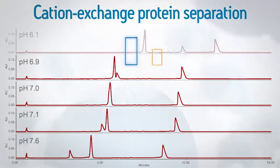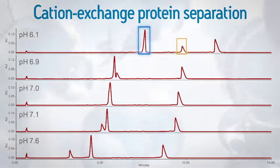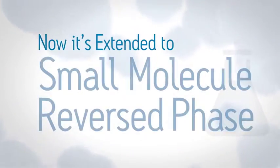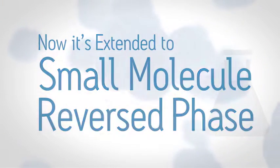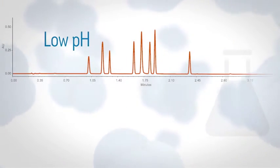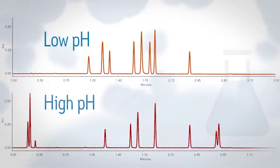You can also use Auto Blend Plus for reversed phase chromatography of small molecules. In developing methods for reversed phase separations, it's common practice to test high and low pH mobile phases that often give very different selectivity with many samples.